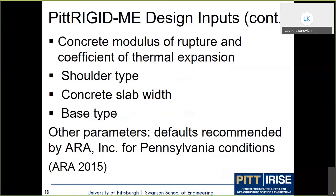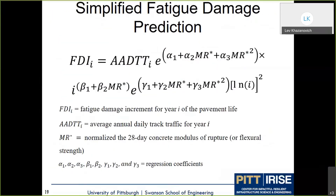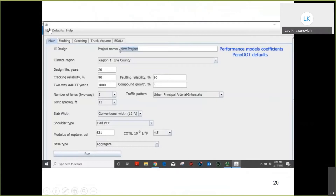Other parameters were set to default values recommended by Applied Research Associates for Pennsylvania conditions. The team then ran a large factorial of more than one million Pavement ME cases and developed simplified regression models for fatigue cracking and differential energy. The fatigue damage regression model is based on daily truck traffic, normalized concrete strength, and regression coefficients alpha 1, alpha 2, and alpha 3, which depend on concrete thickness and joint spacing.